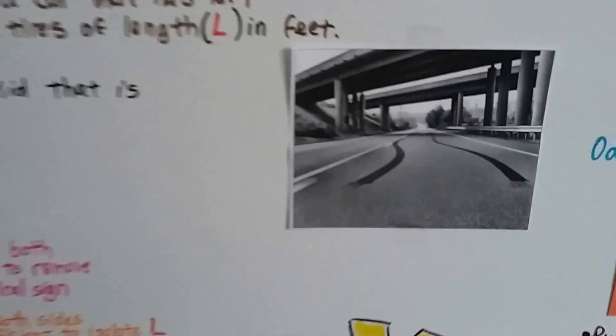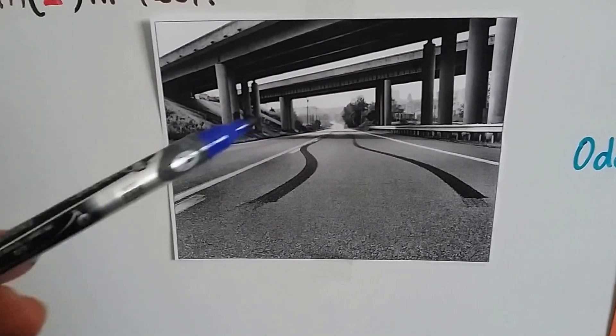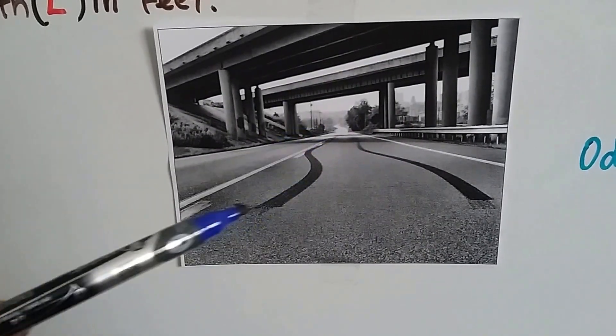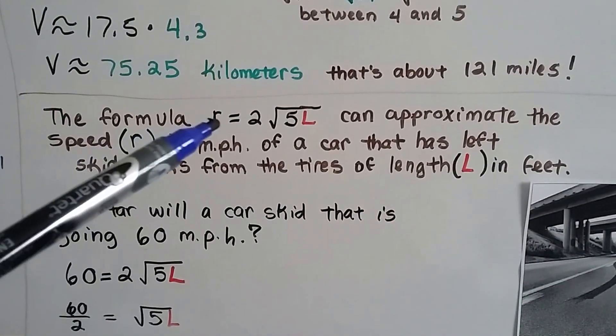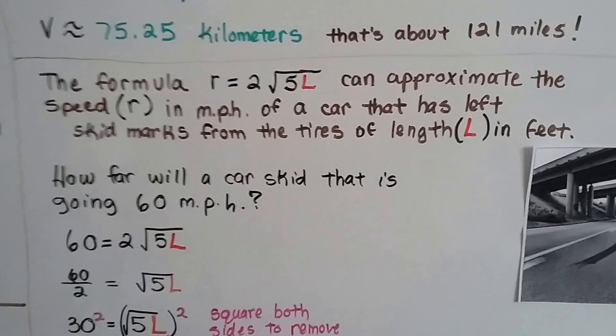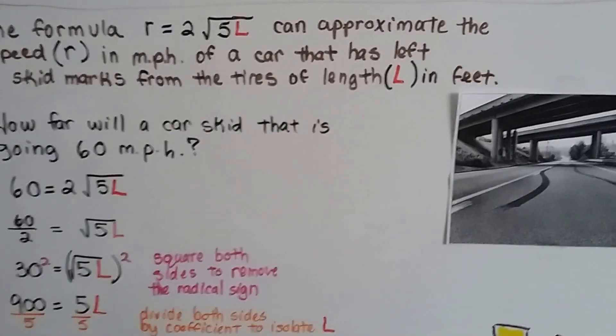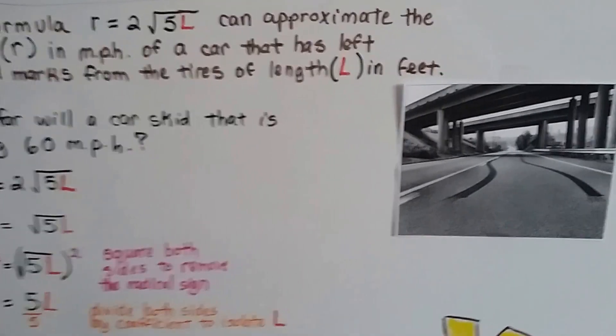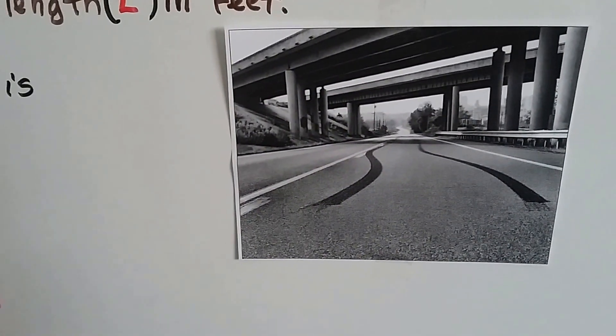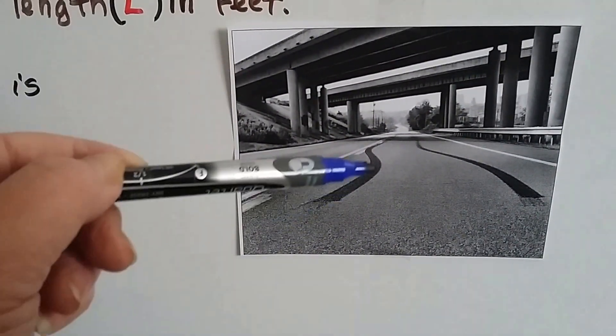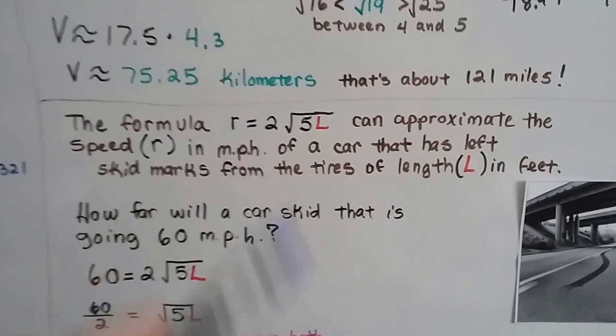Now we have another one. Take a look at this picture. Look at that, there's skid marks from an accident. Maybe they were trying to keep from hitting a deer or a dog or another car, but when they hit the brakes, the tires left rubber on the road and it skidded. The formula R equals 2 times the square root of 5L can help us approximate the speed, R, in miles per hour of a car that's left skid marks from tires that are a certain length L in feet. The police and detectives can actually tell from the length of the skid marks how fast you were going. Because once you slam the brakes on and you start skidding, however long that is, tells them the speed you were going by using this formula.